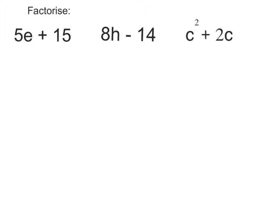So for the first question, we're looking for the common factor of 5e and 15. Well, the largest number that divides into 5 and 15 is 5. So 5 is going to go outside my bracket. Now I'm going to divide both these terms by 5. So 5e divided by 5, well the 5s will cancel, so I'm just left with my e. And 15 divided by 5 is 3, so it comes to plus 3.